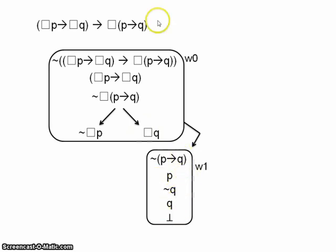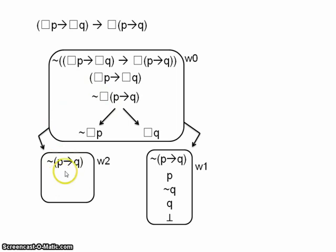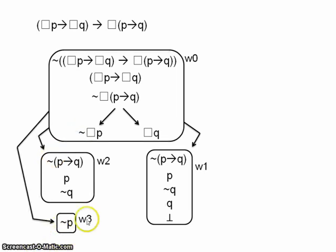Focusing on the left branch: we open a new world with 'not necessarily if P then Q', again deriving P and not-Q. That's all we can do in that world — no more rules to apply. We then use 'not necessarily P' to open yet another world, where we derive not-P. But again, that's all — there are no more rules to apply on this branch. So our tree remains open, and that means our argument is invalid.